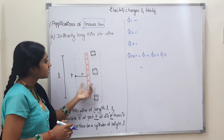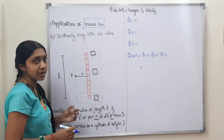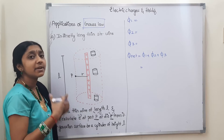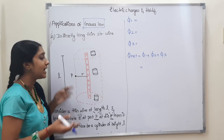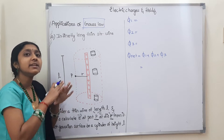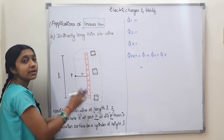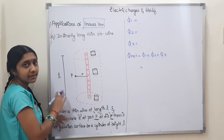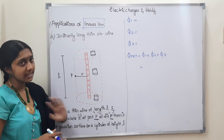Now we are going to consider this long thin wire. It is a thin wire of infinite length. To proceed with the derivation, we restrict the length to L. So consider a thin wire of length L.